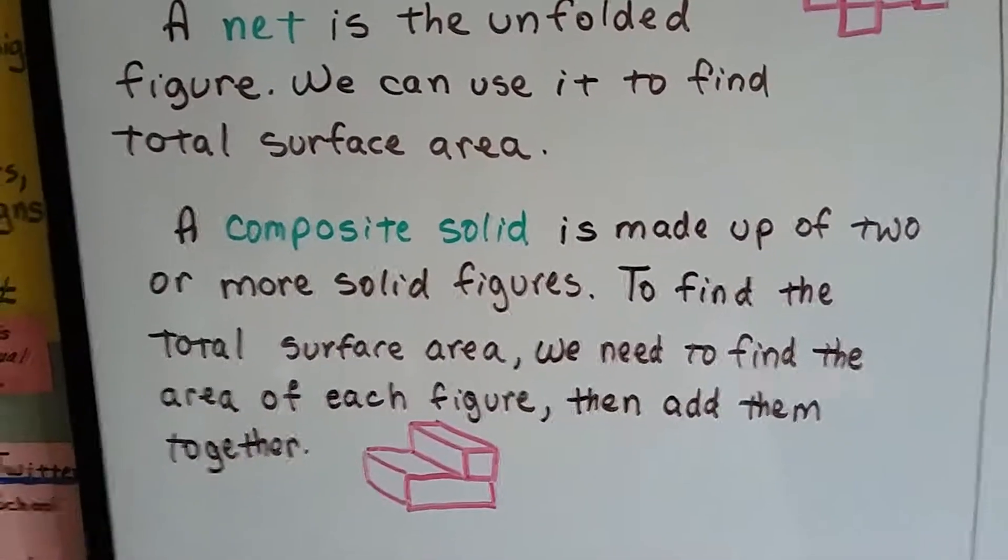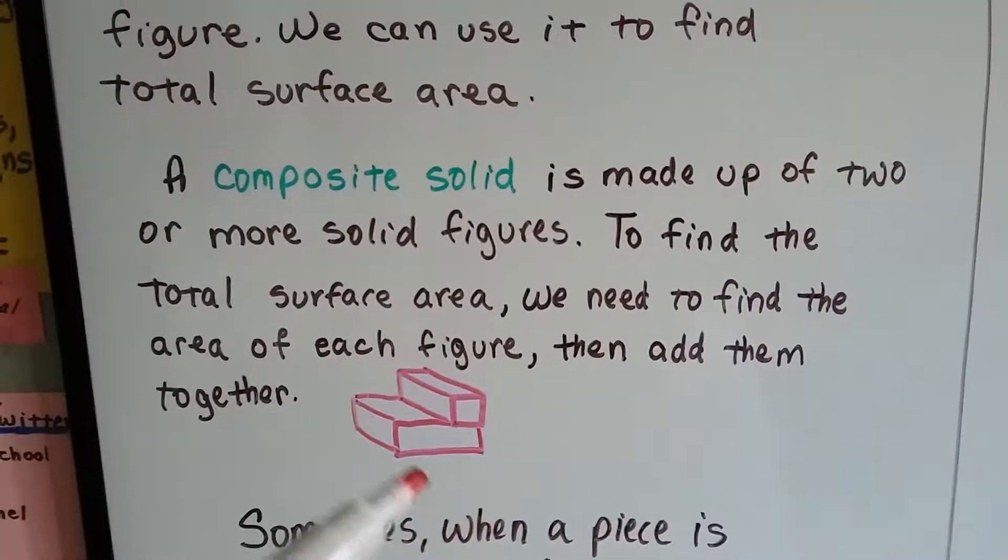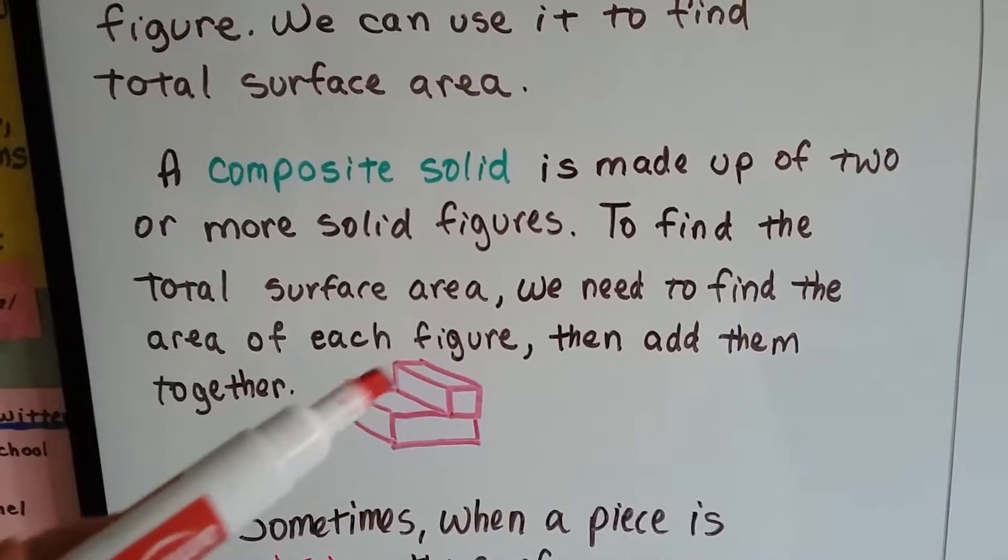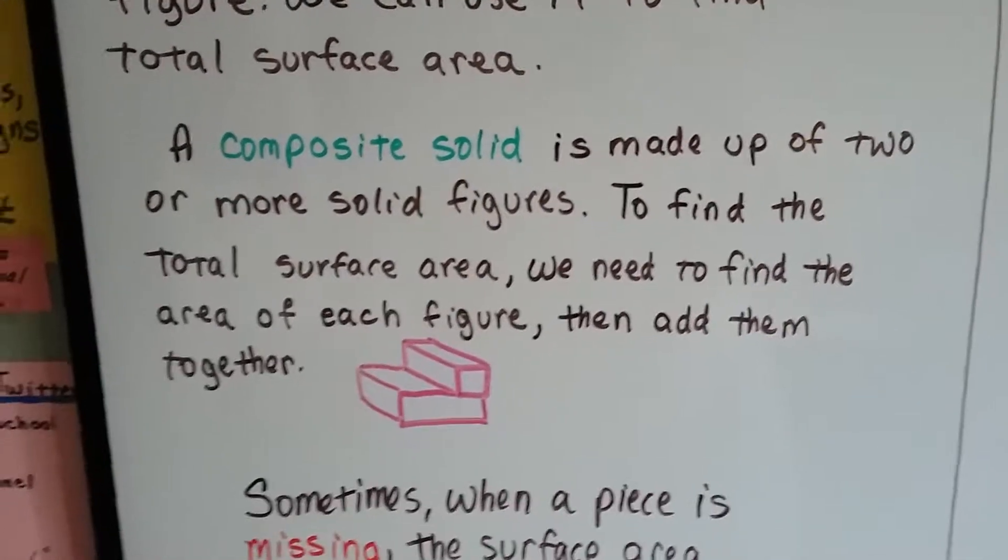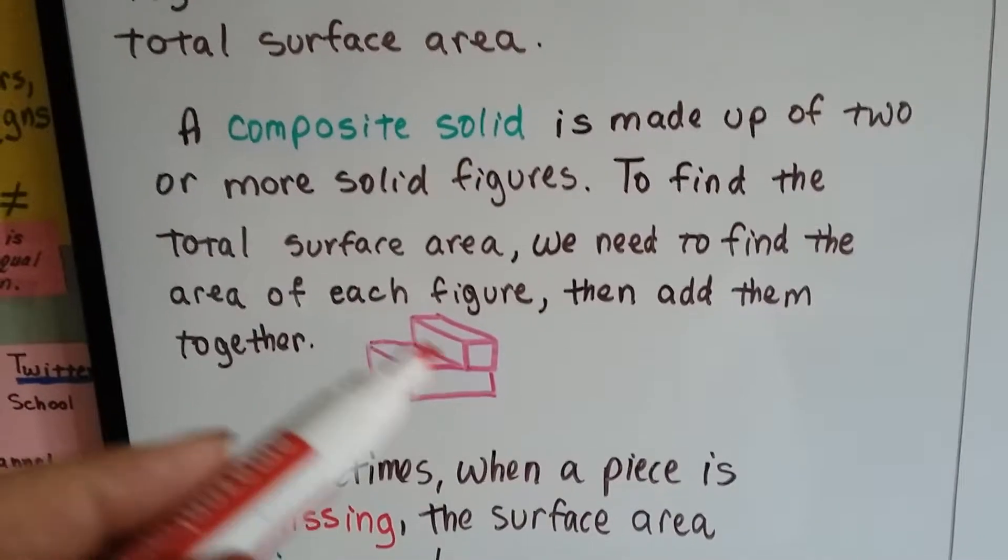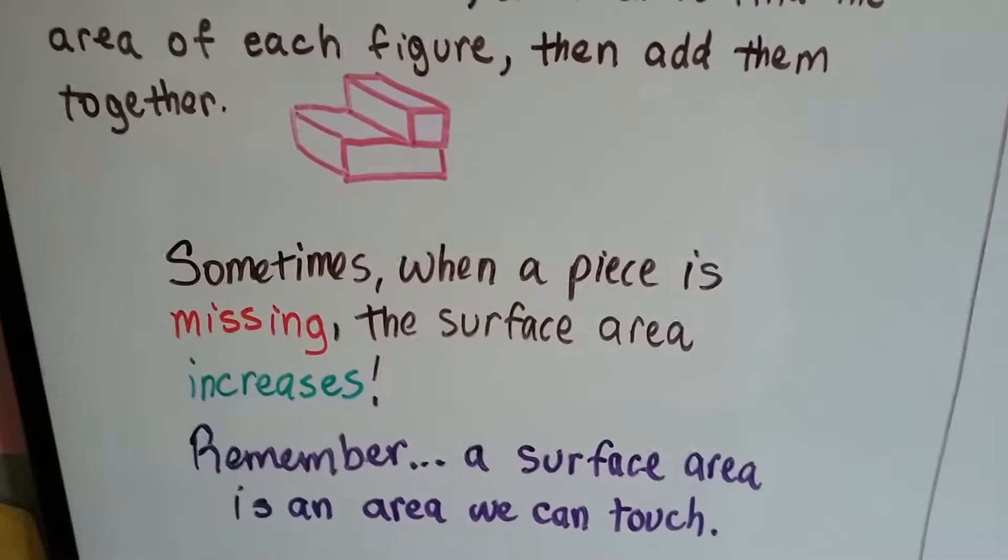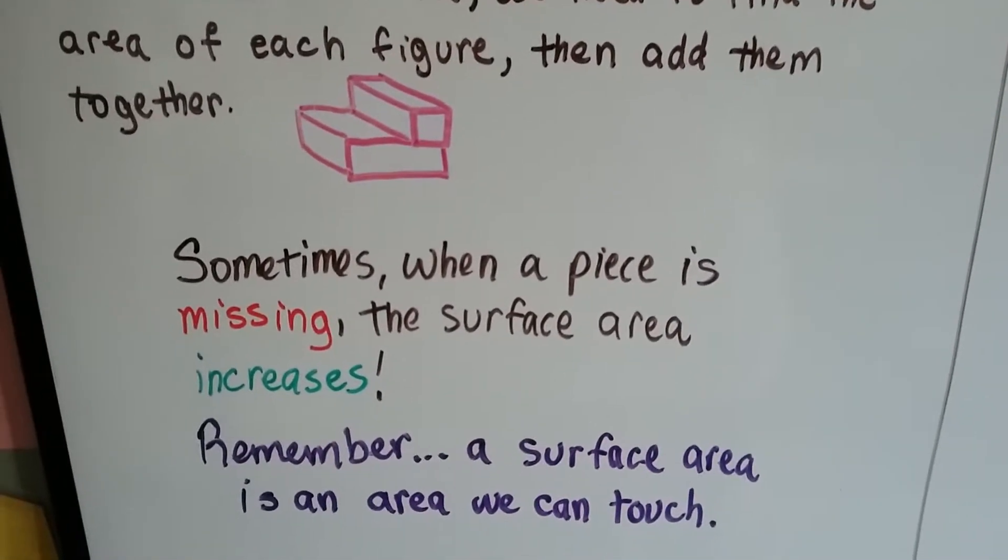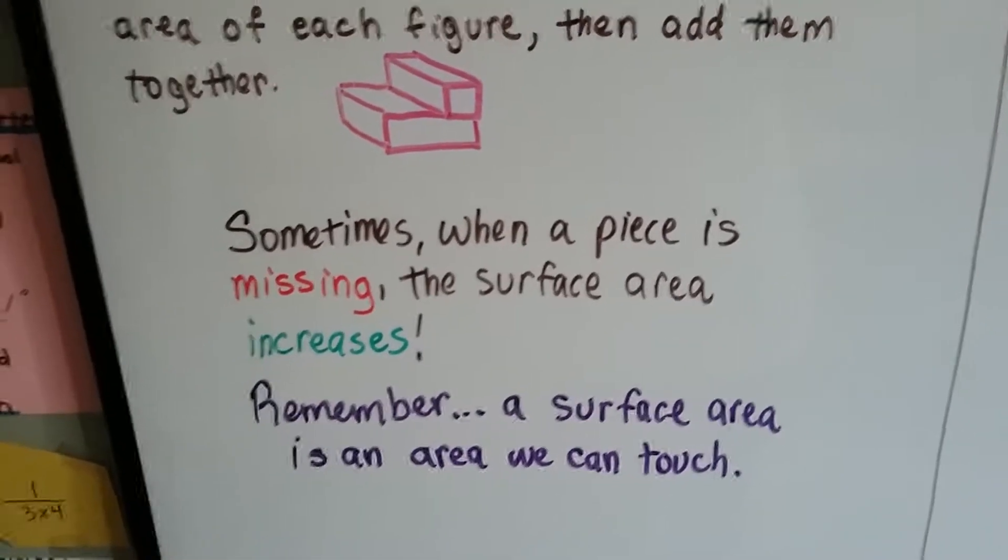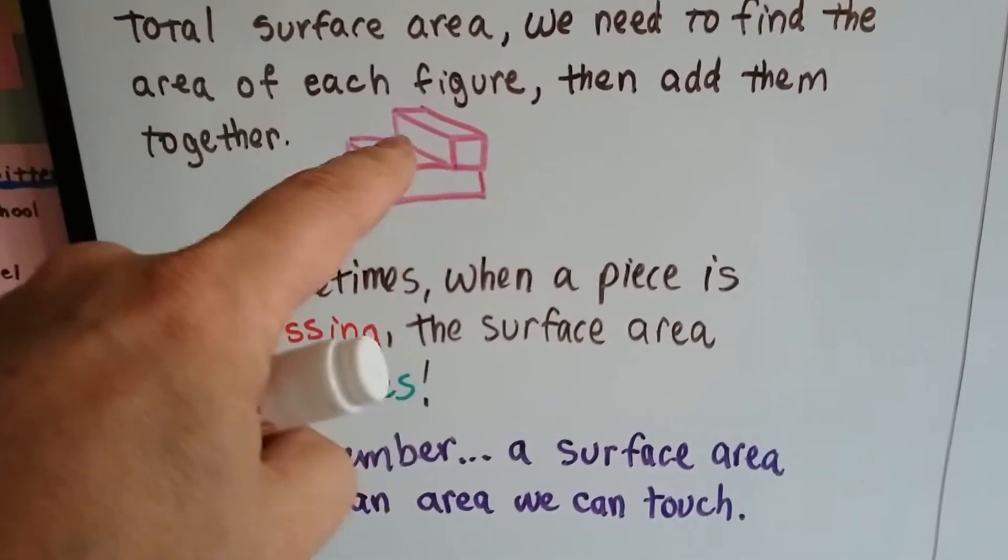A composite solid is made up of two or more solid figures. To find the total surface area, we need to find the area of each separate figure, then add them together. Then we can subtract the part that we can't touch, like in between here. Sometimes when a piece is missing, the surface area increases. Remember, the surface area is an area we can touch. We wouldn't be able to touch in between these two blocks.